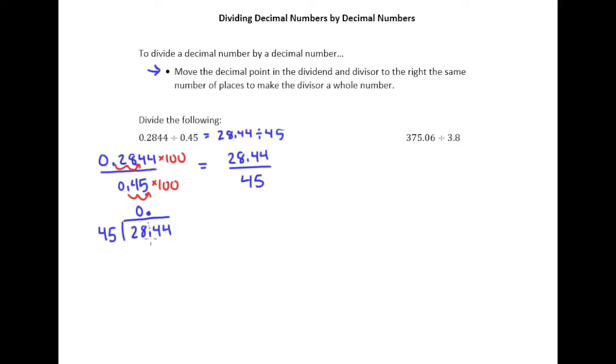45 goes into 284. Let's see, 45, you know, that's close to 50. So 50 goes into 25, 5 times. 284 is quite a bit bigger than 250 and 45 smaller than 50. So I think actually I'm going to bump my guess up by 1. I'm going to guess 6. So 6 times 5 is 30, 6 times 4 is 24 plus 3 is 27. Looks like I made a good guess there.